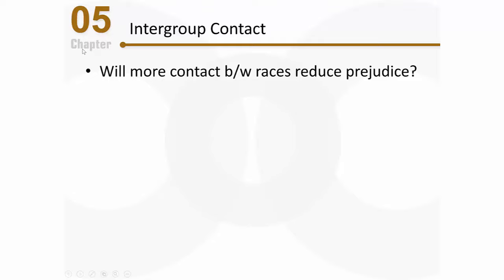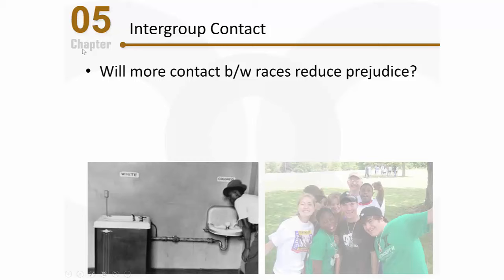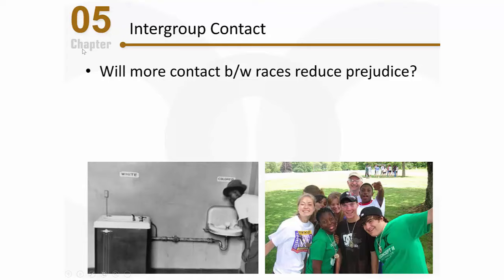Seems like a very logical question. Think about how things were when racial segregation was very prominent in our society. You can see there's nothing about that situation that encourages healthy interaction between the races. In a perfect world, we're looking for a situation where we see diverse groups of people from a variety of different backgrounds who genuinely like each other's company, and they're able to work together and learn together and achieve shared goals together.